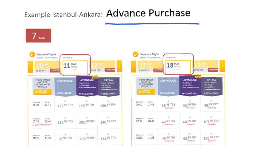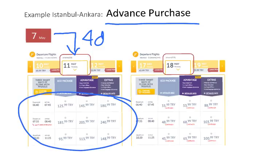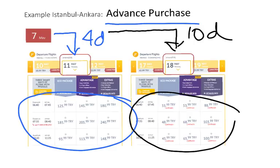We saw that advanced purchase is one of the mechanisms used to set up different prices. In this case, we are talking about four days before the flight. If I had booked the ticket more in advance — say ten days before the flight — the prices are quite different. For instance, a flight ticket of 185 Turkish Liras for four days in advance goes down to 50 Turkish Liras when booked 10 days in advance. So the closer the flight day gets, the more expensive it gets.